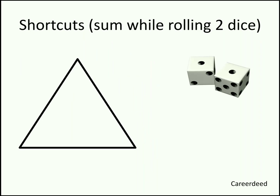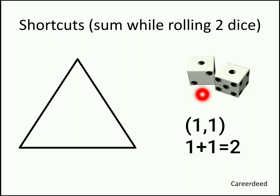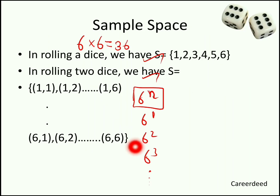Similar to problems on coins, we have shortcuts for problems on dice also. This shortcut helps you to find the total sum of faces while rolling 2 dice. The minimum total sum of faces when rolling 2 dice is 2, that is (1,1) — when you sum 1+1 you get 2 — and the maximum total sum is 12, that is (6,6).